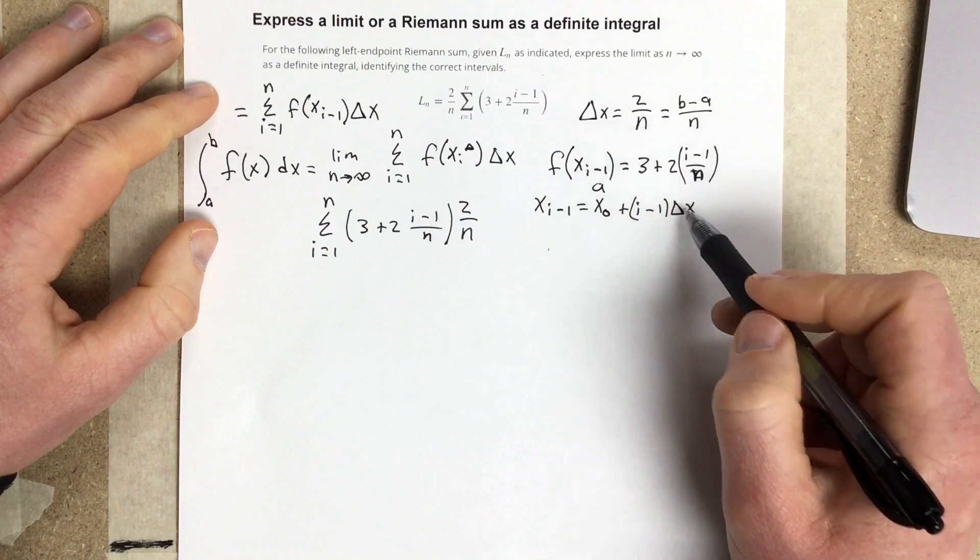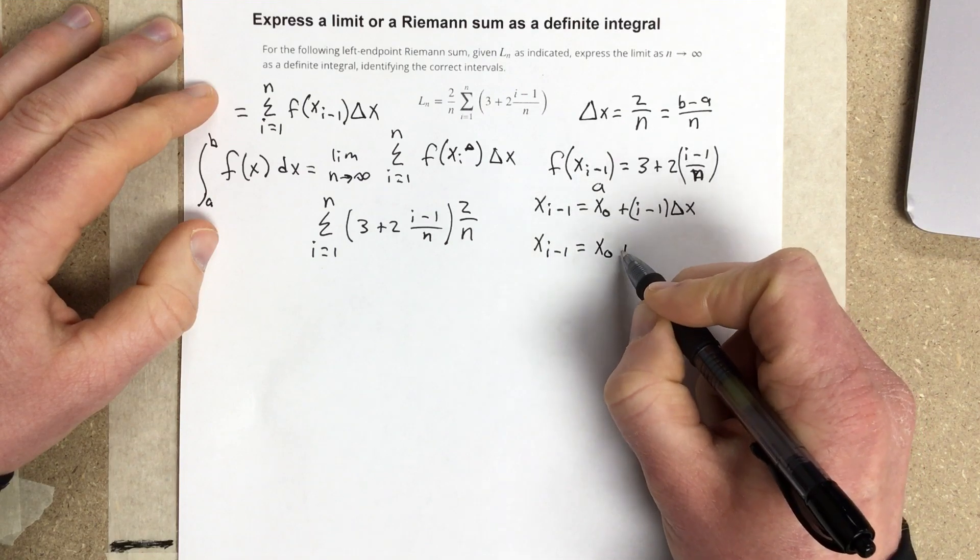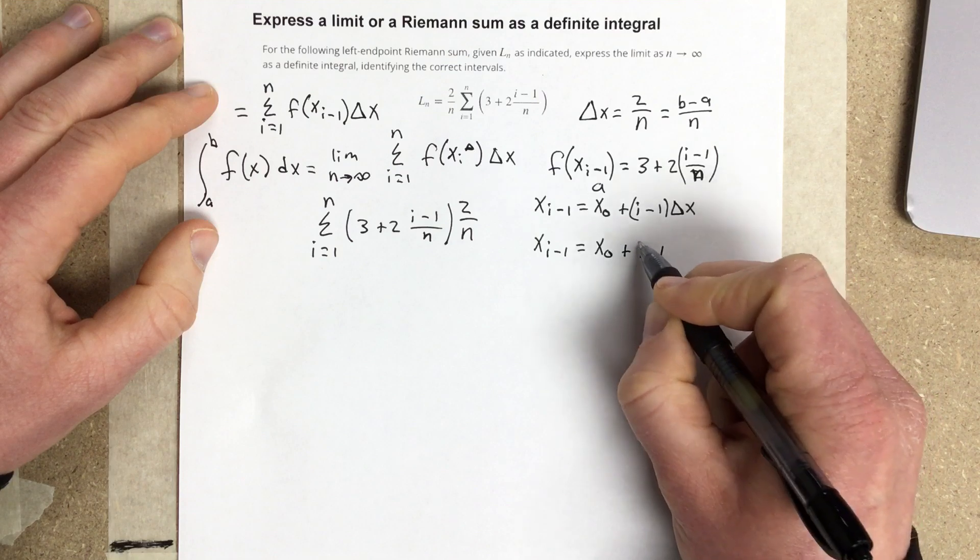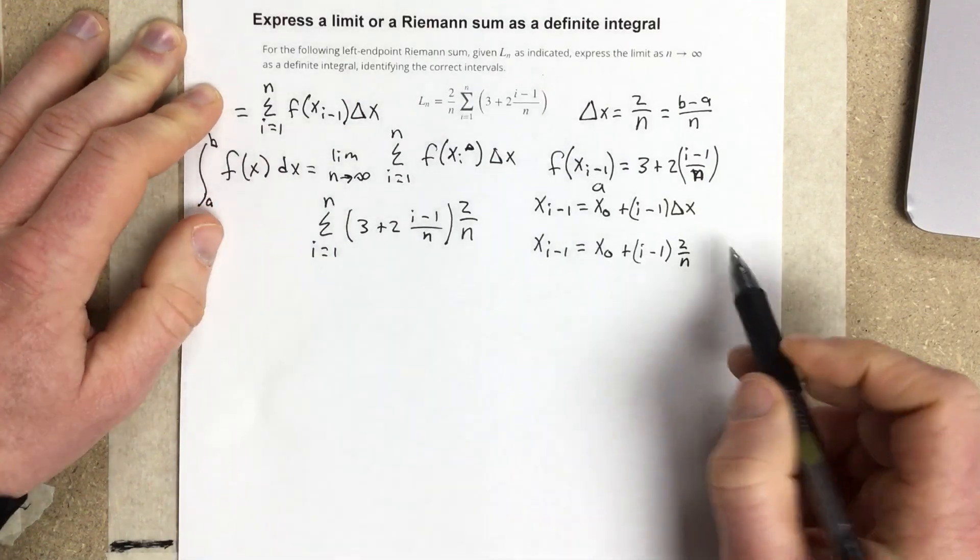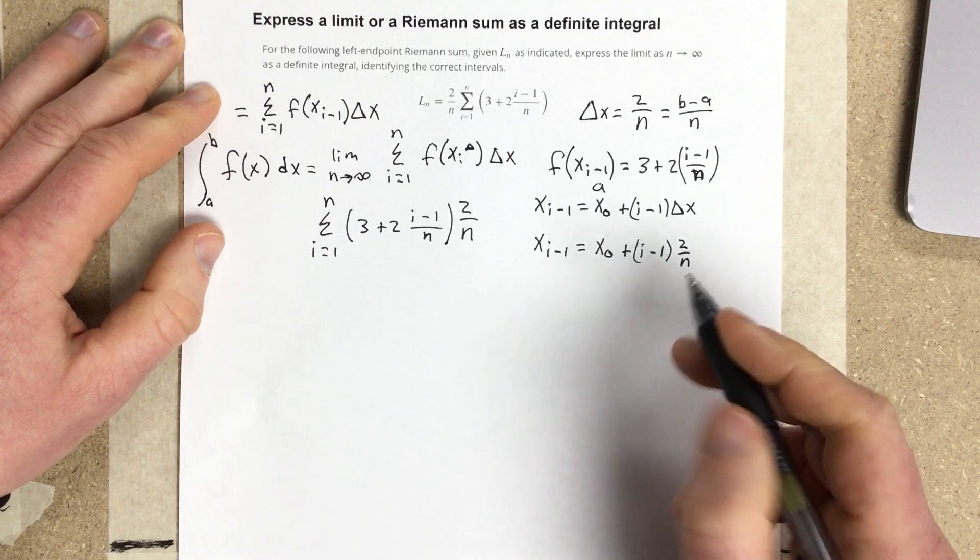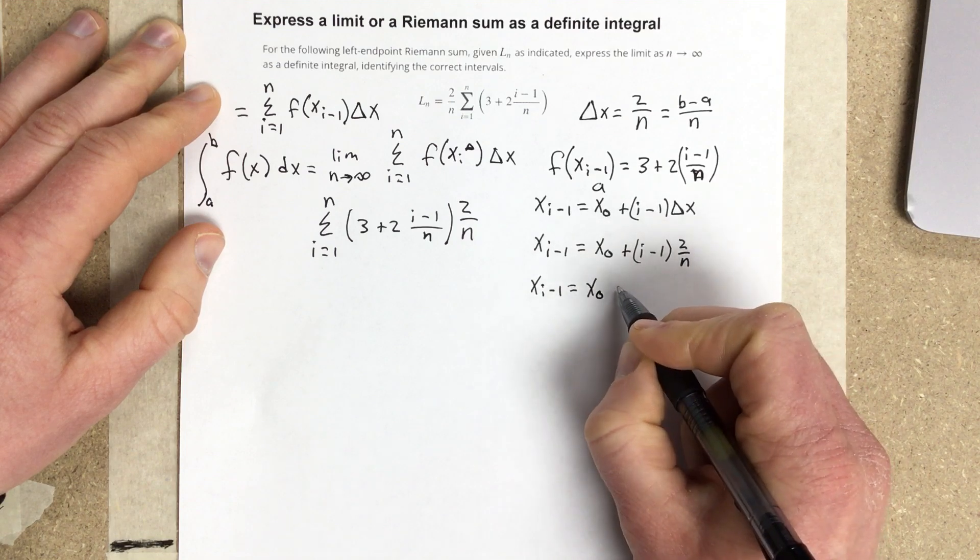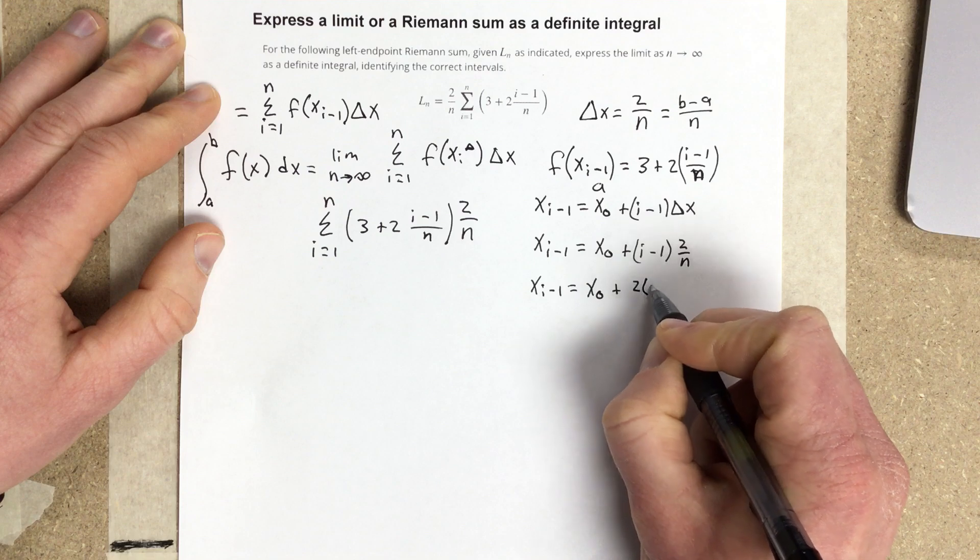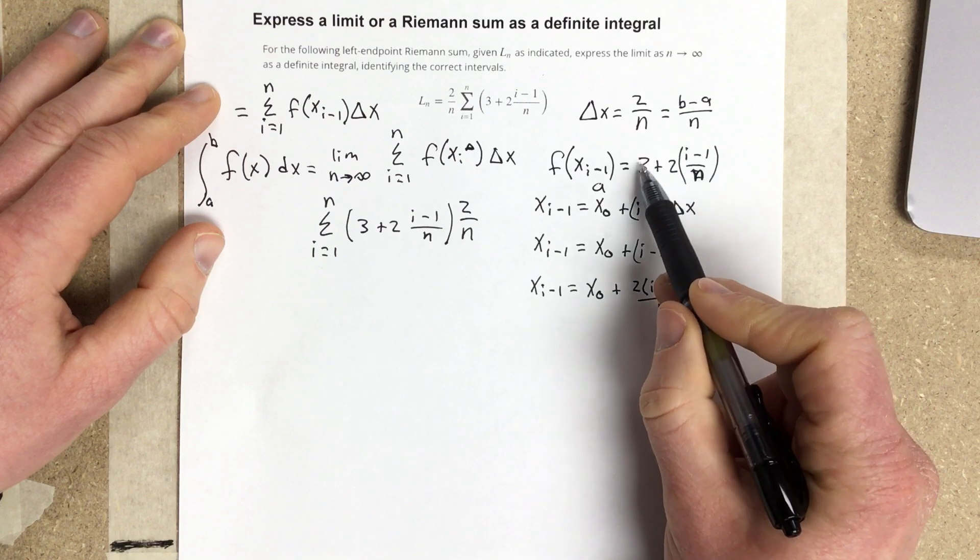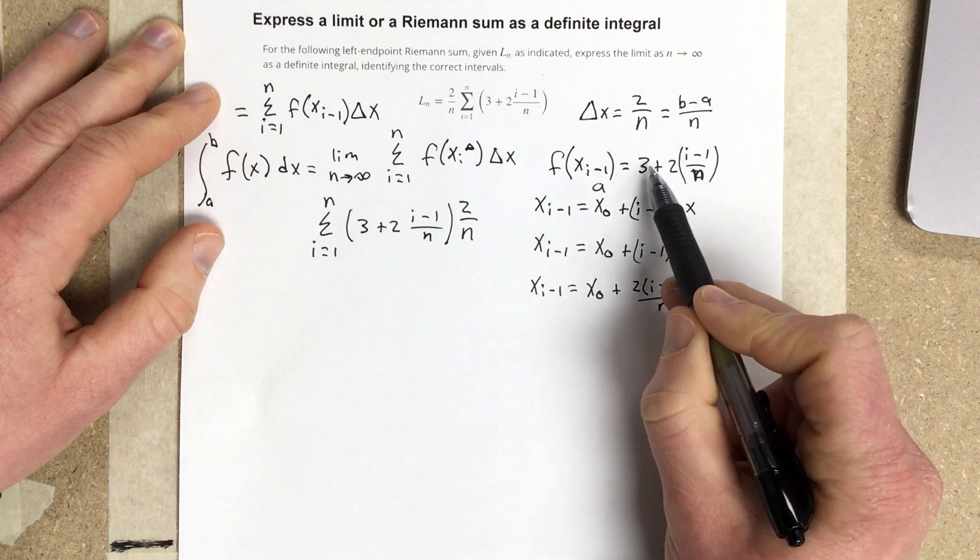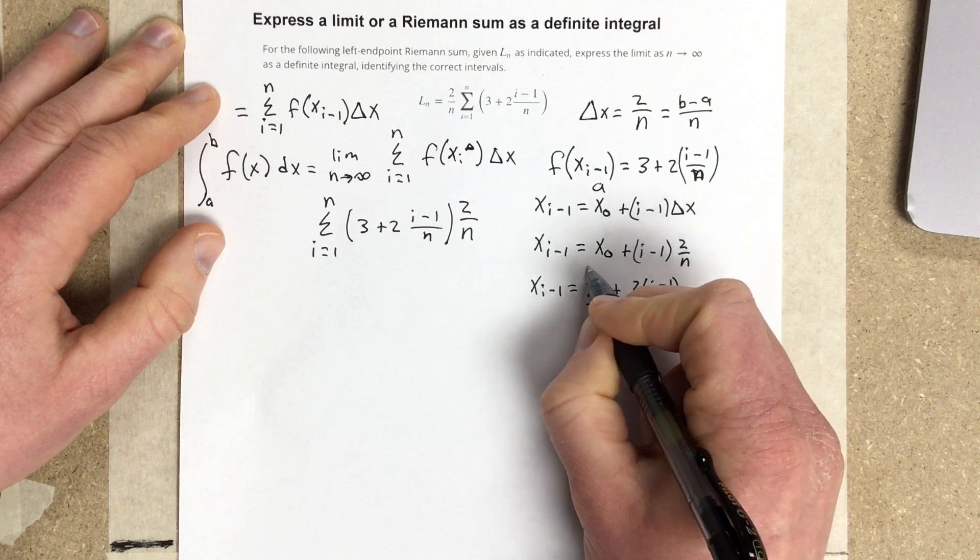So, if we know this, we can actually substitute in change of x for 2 over n here. So, change of x is 2 over n, and we can write x_{i-1} equals x_0 plus (i-1) times 2 over n. If I distribute that, you'll notice it looks like x_0 plus 2(i-1) over n, which is basically exactly like this setup for f(x_{i-1}), which tells us that x_0 or a would equal 3.